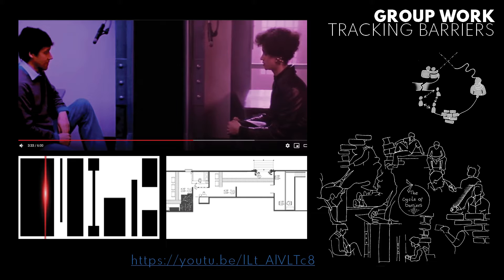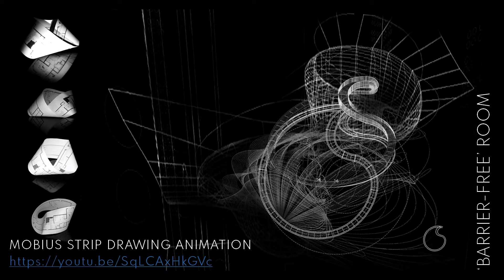The conclusions from the group work were that the use of barriers is a key theme in the film The Crying Game. We identified the tangible and intangible barriers and tracked them through a film sequence. Barriers are placed to separate two spaces and are intersection points which are often conflicting. My concept development surrounding barriers was that interactions with barriers are endless, but most are not visible and we're not really aware of them. I explored the notion of a barrier-free room based on a Mobius strip, which has its own hidden, invisible barrier connecting it.